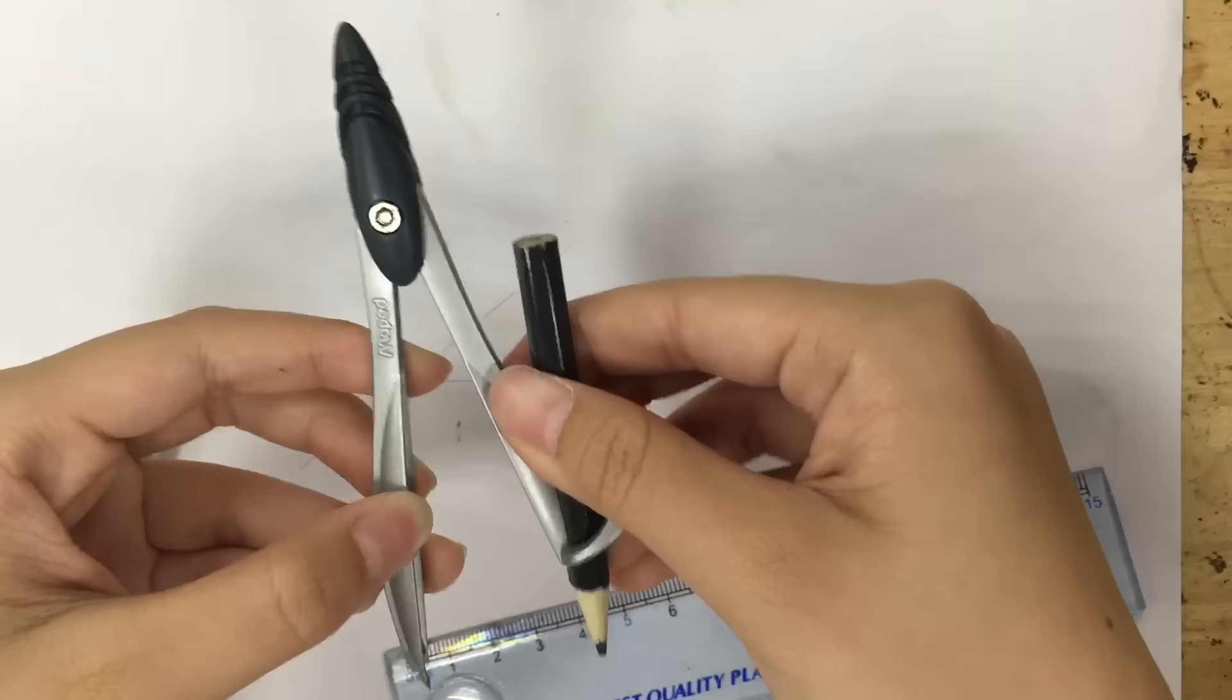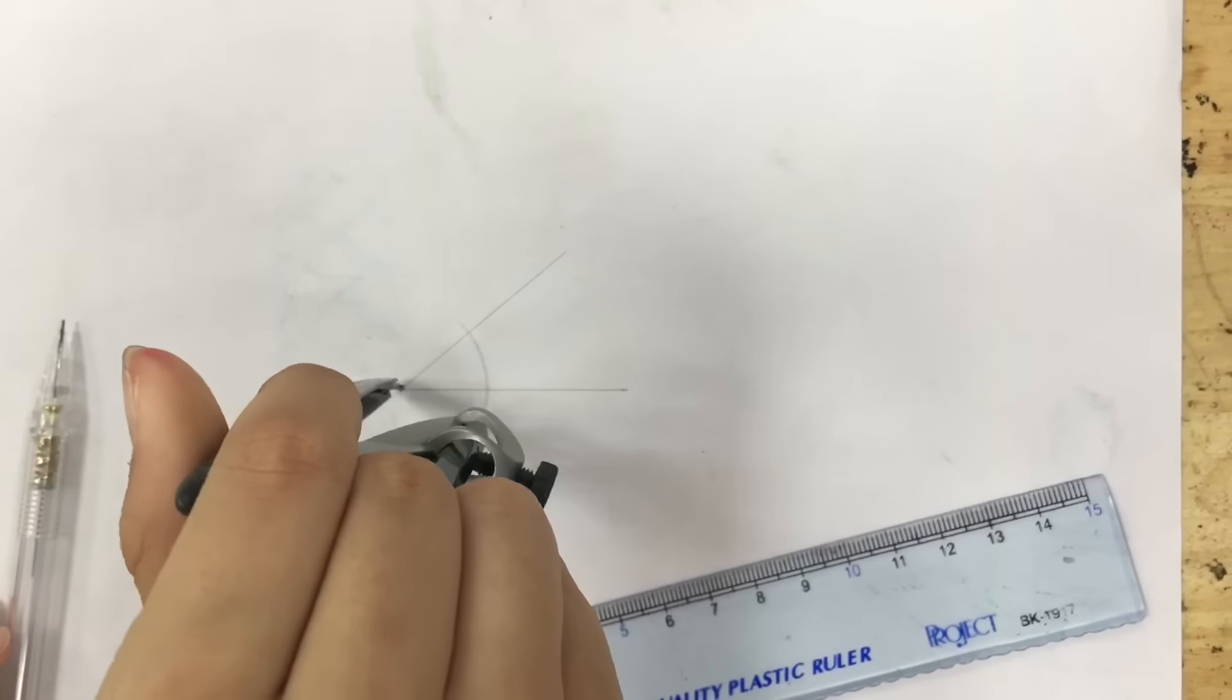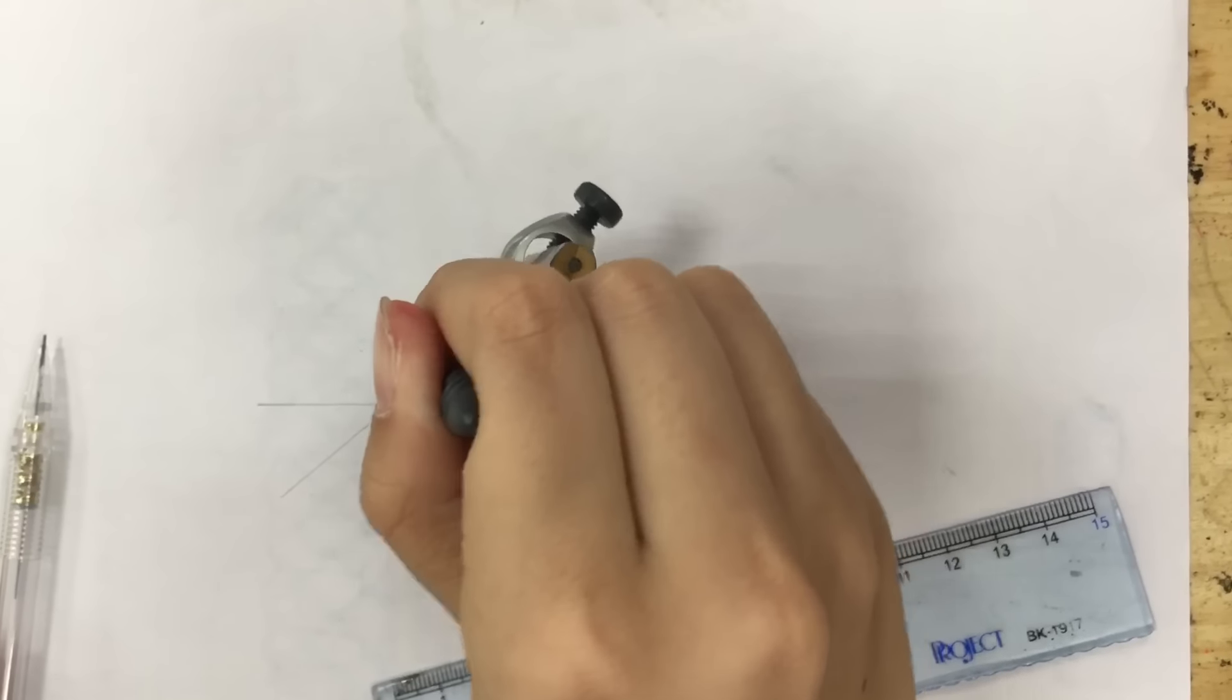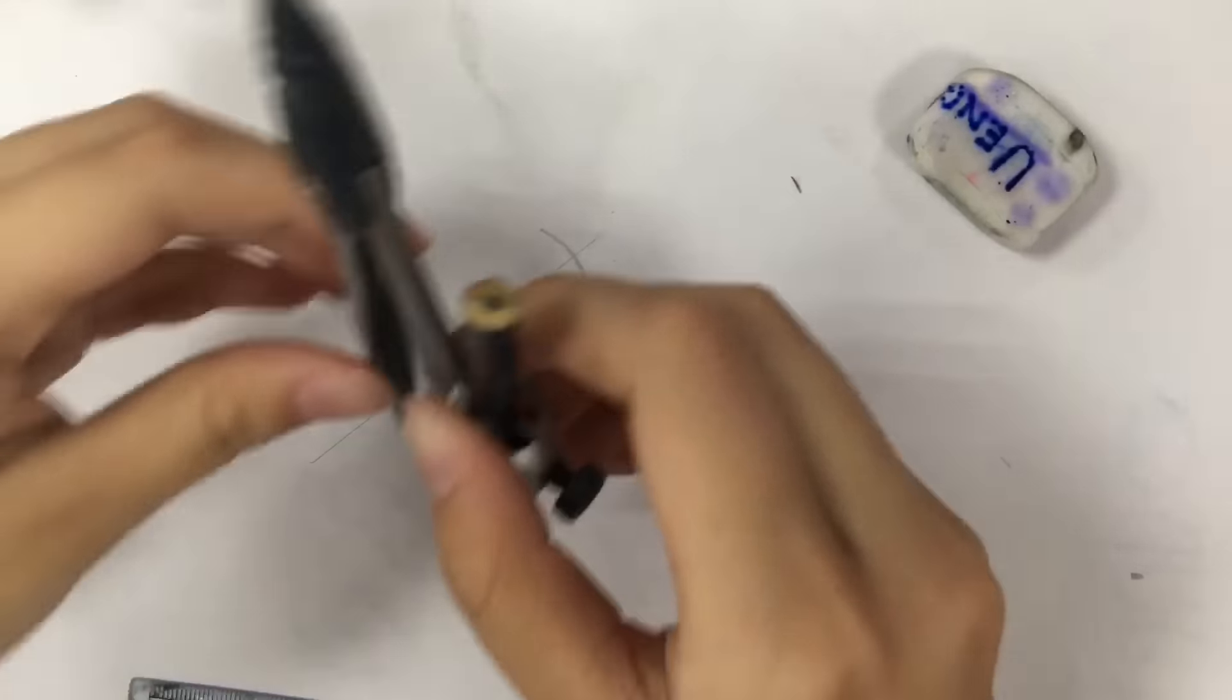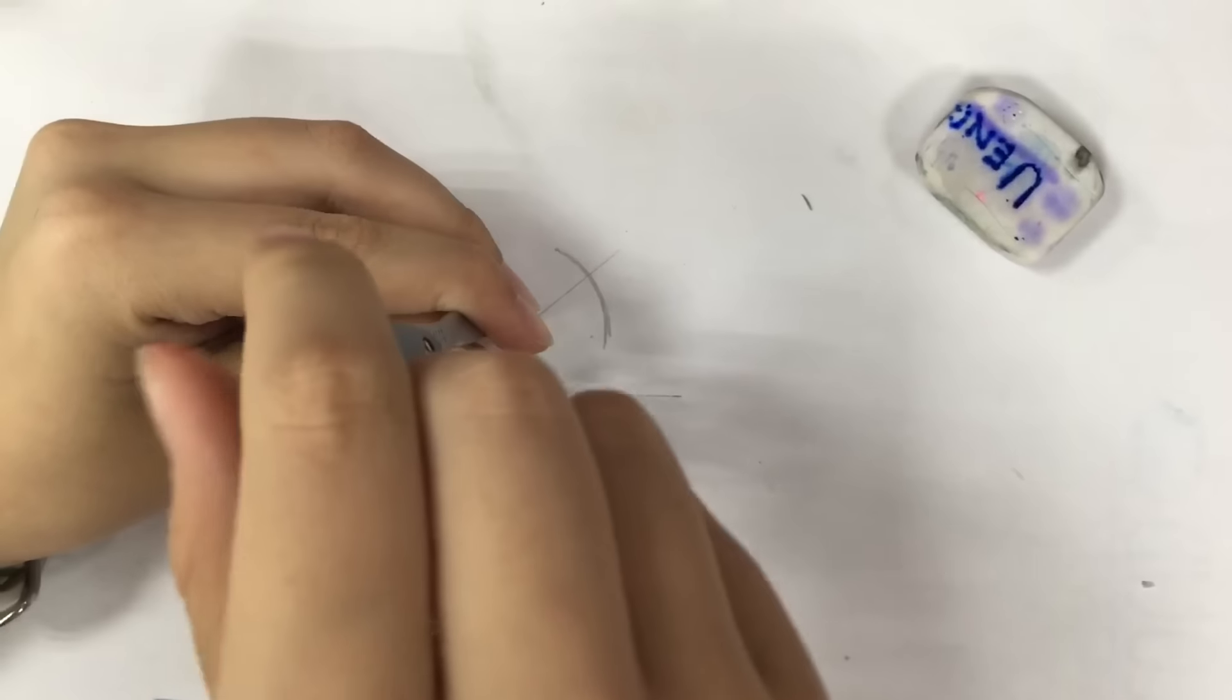Using a compass, you will draw an arc like this. Then, you will measure your angle on arc and make a little mark on it.